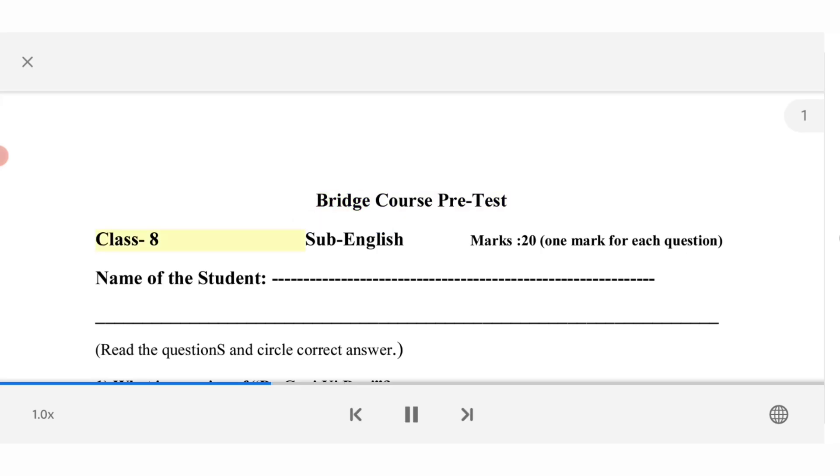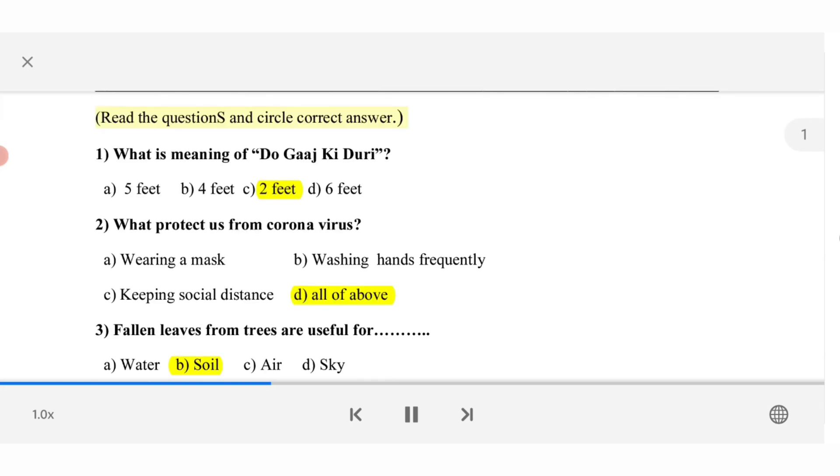Bridge course pre-test. Class 8. Sub-English. Marks 20. One mark for each question. Read the questions and circle correct answer.